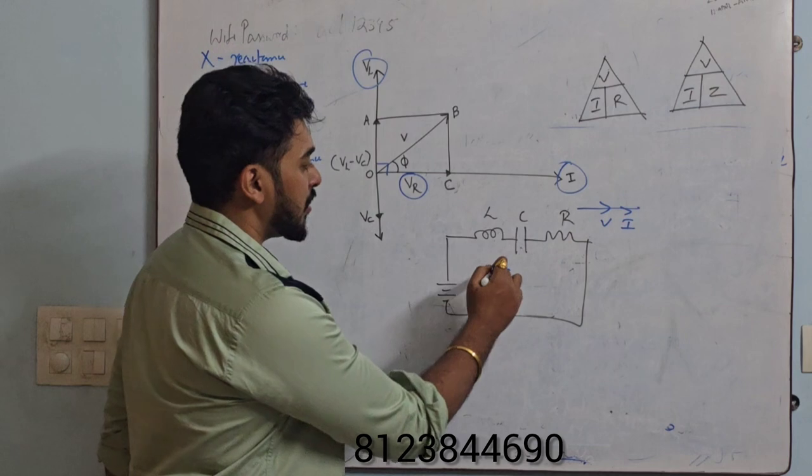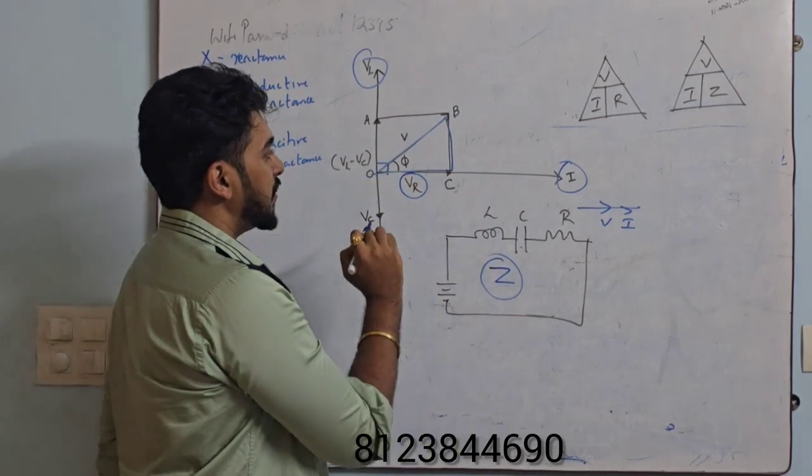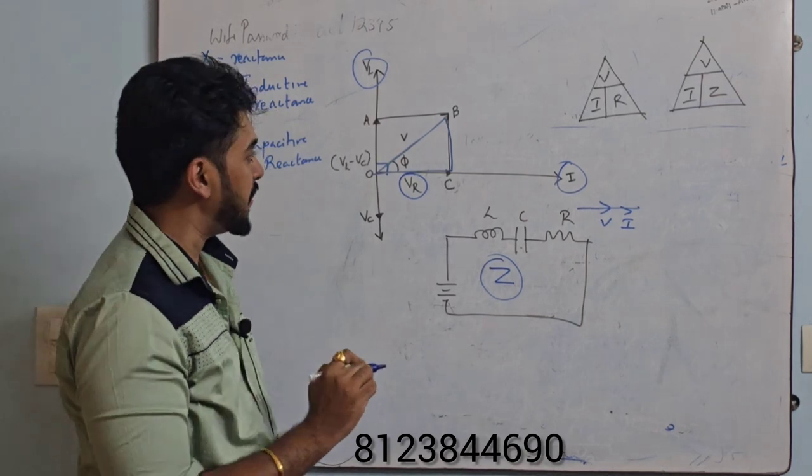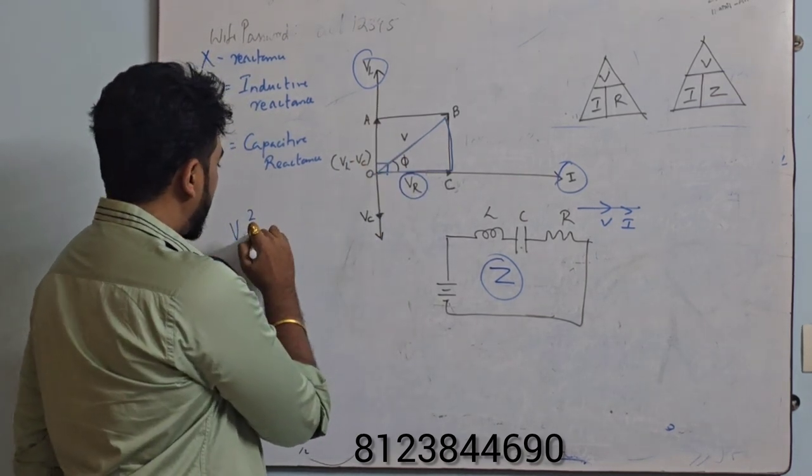And again I told you we will derive the impedance. So for that I will take this triangle OBC. I will take triangle OBC. Hypotenuse square, that is V², is equal to what?